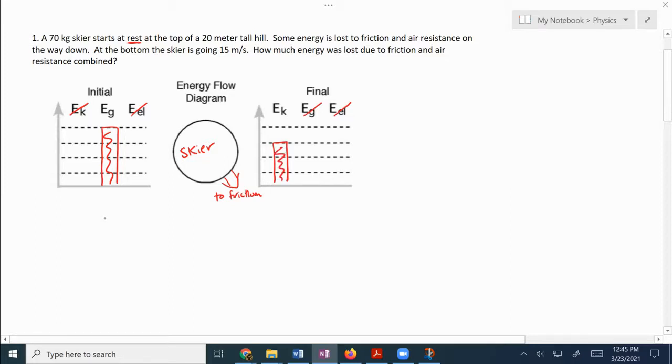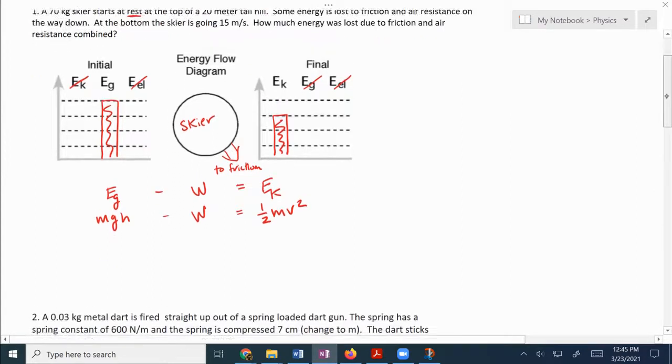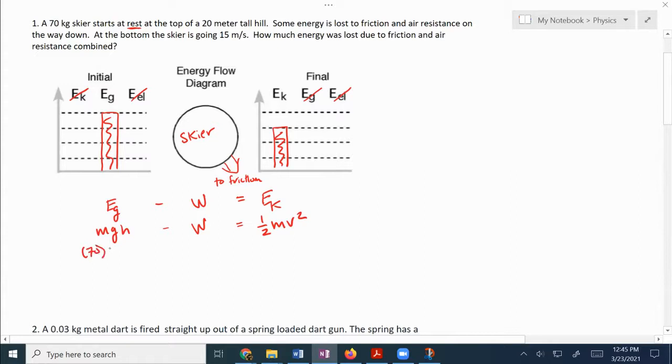So now to use it to write our equation, that's going to give us gravitational energy minus the work due to friction is going to be equal to the kinetic energy. So now to plug in some of the information, gravitational energy is mgh minus our w and then kinetic energy is one half mv squared. So let's see here. We got a 70 kilogram skier, acceleration due to gravity is 9.8 and the height is 20 meters. W is what we're looking for, that's the amount of energy that's lost due to friction and air resistance. One half 70 and it says we're going 15 meters per second. So there we go.